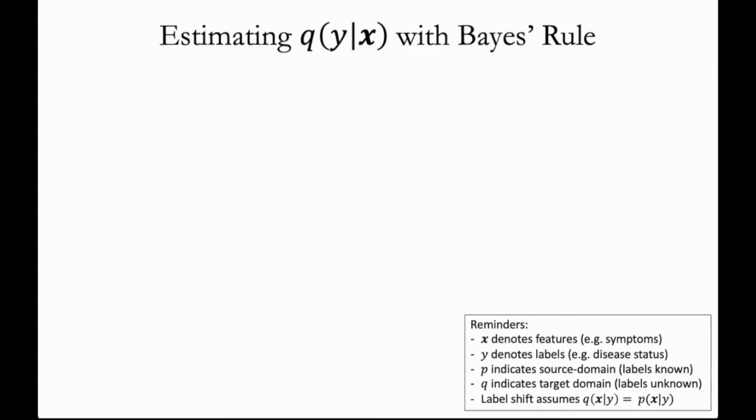So now let's talk about how Bayes' rule is helpful in estimating q(y|x). First, let's establish that although p(x|y) is what is preserved during label shift, computing it from the data is hard when x is high dimensional.